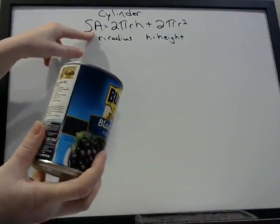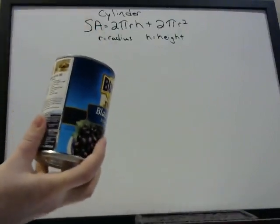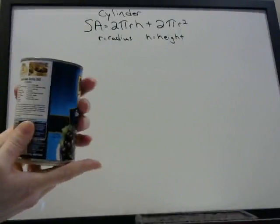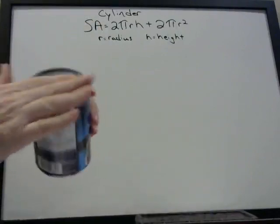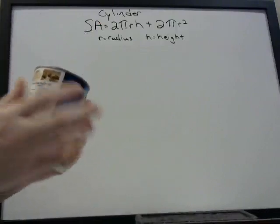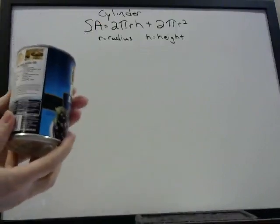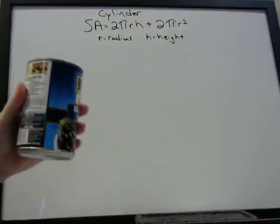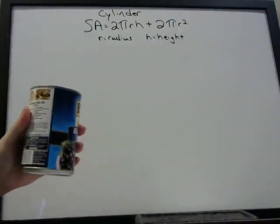Here we're talking about the surface area of a cylinder — something that looks like a can. You can think of it as: you're going to paint the top and the bottom and all around the sides, around the label. And that's going to give you your total surface area. That's what this formula represents.